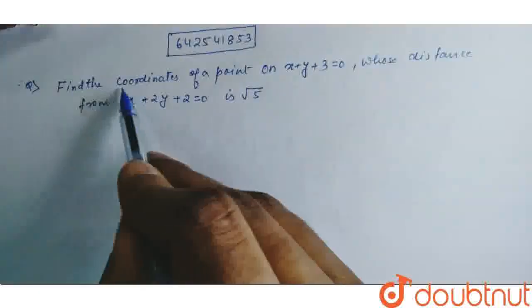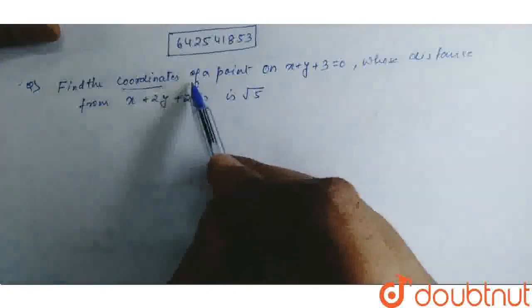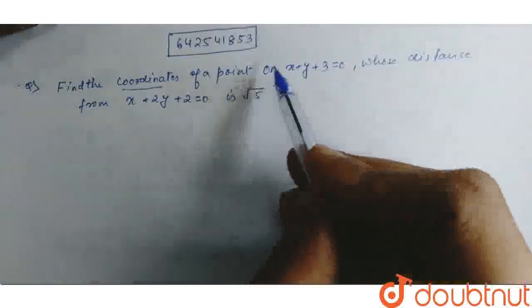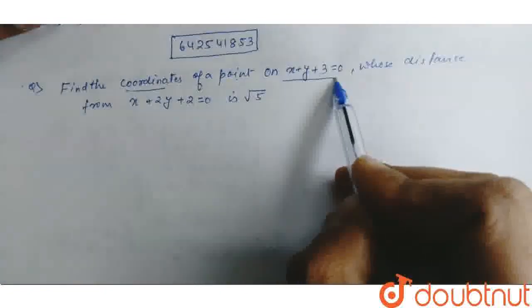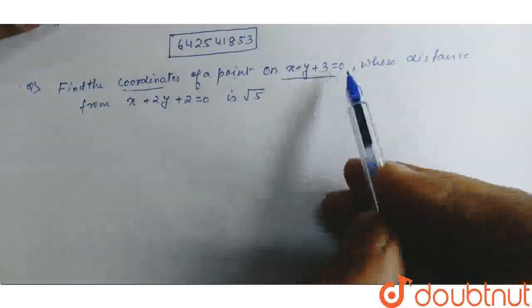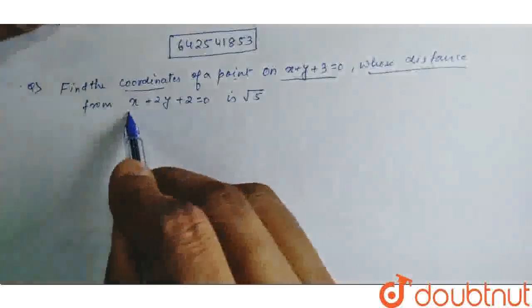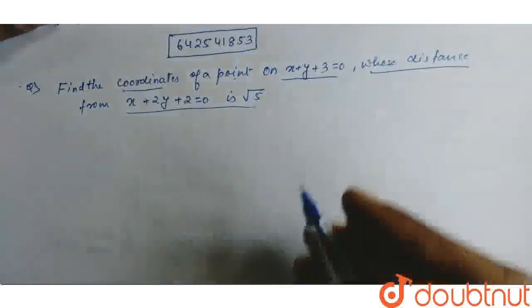Hello friends, here we have to find the coordinates of a point. The point is on the line x plus y plus 3 equal to 0, whose distance from this is root 5.